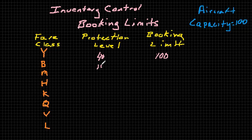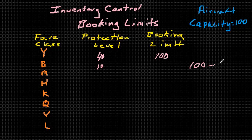This logic applies all the way down the fare structure. Let's say the airline determines they should protect 10 seats for the B-class. Well, the booking limit isn't going to be 10 — it's actually going to be all the seats that are left after they've protected for the higher fare customers. In this case, the booking limit is going to be 100, the capacity of the airplane, minus the 40 seats that were set aside for the Y-class customers, so 60 seats would be sold to B-class customers if they showed up. The airline only thinks there are going to be 10 customers, but they want to be able to sell more seats at that fare if more customers arrive than they anticipated.